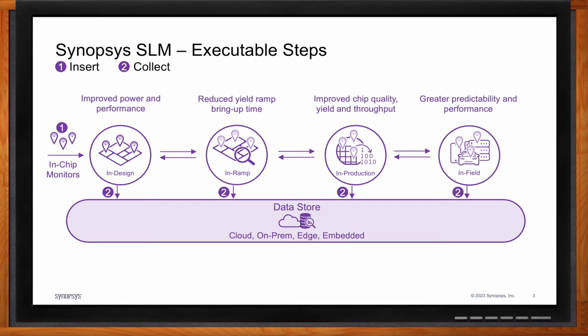The second step is the collection part, where you're collecting data across every single lifecycle stage. It's more than just manufacturing test data through production — it includes design data, sensor data, and diagnostic data. Also critical is data from the fab, such as WAT data (wafer acceptance test data) and defectivity data. All of these are critical data elements needed in the overall mix to ultimately be able to do root cause analysis. The more data you have, the better your ability to determine root cause.